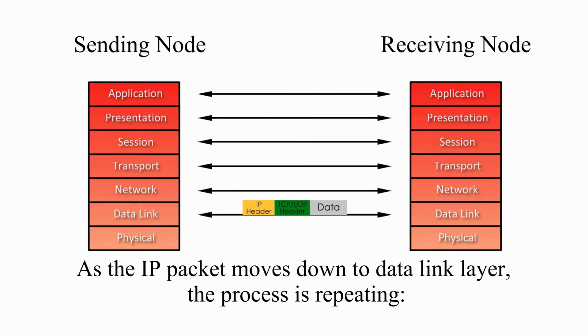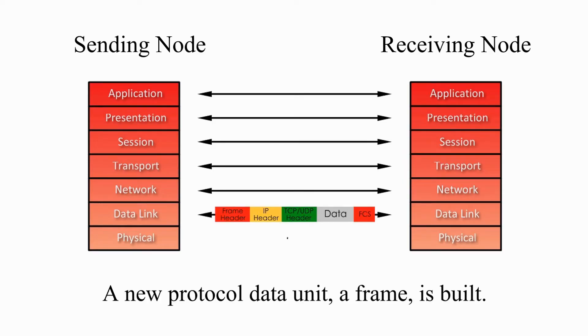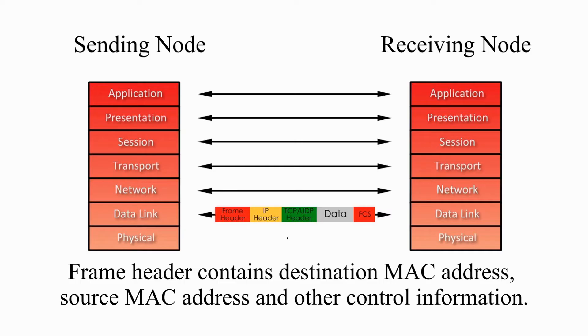As the IP packet moves down to the datalink layer, the process is repeated. A new header is added, and a trailer is also attached. A new protocol data unit, a frame, is built. Frame header contains destination MAC address, source MAC address, and other control information.